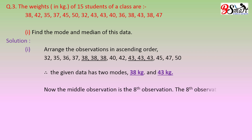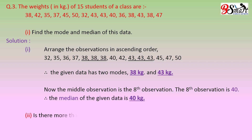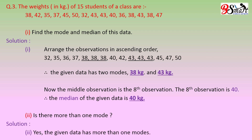The middle observation is the 8th observation. The 8th observation is 40. Therefore, the median of the given data is 40 kg. Sub question 2: is there more than 1 mode? Yes, the given data has more than 1 mode — 2 modes: 38 kg and 43 kg.